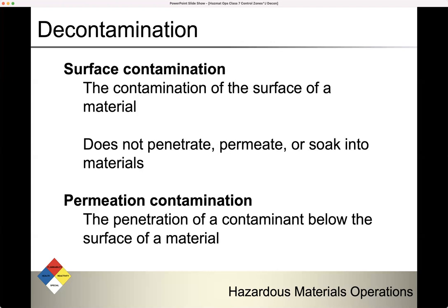Surface contamination is contamination of the surface of a material. It does not penetrate, permeate, or soak into whatever it's on — it just sits on top of it. Then there's permeation contamination — penetration of a contaminant below the surface of something.